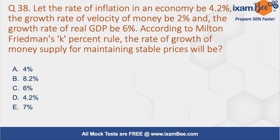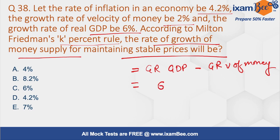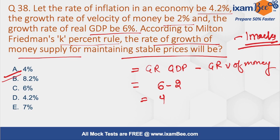Question number 38. Let the rate of inflation be 4.2%, the growth rate of velocity of money be 2%, and the growth rate of real GDP be 6%. According to Milton Friedman's K% rule, the growth rate of money supply equals growth rate of real GDP minus growth rate of velocity of money: 6 minus 2 equals 4%. The answer is 4%. This is a simple, formula-based one-mark question.